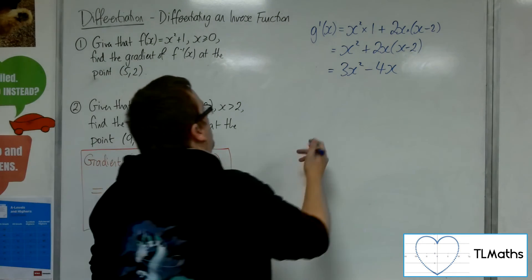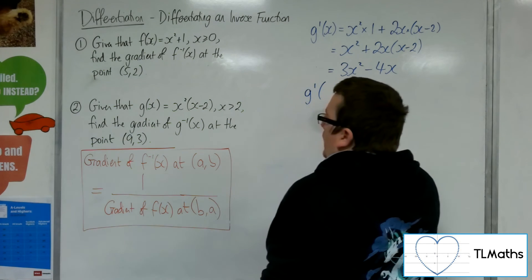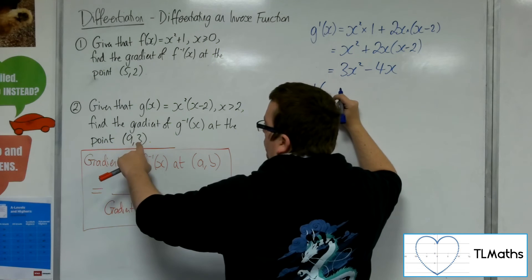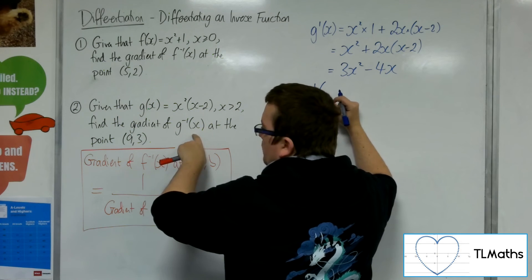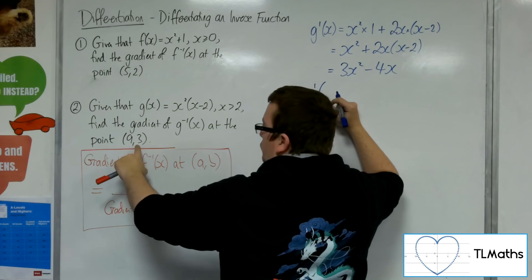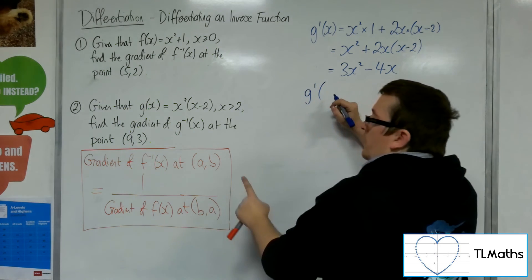So, if I work out what that is equal to, when x is equal to 3, because I want to find the gradient of g inverse at the point (9, 3), this will be 1 over the gradient of f(x) at (3, 9).